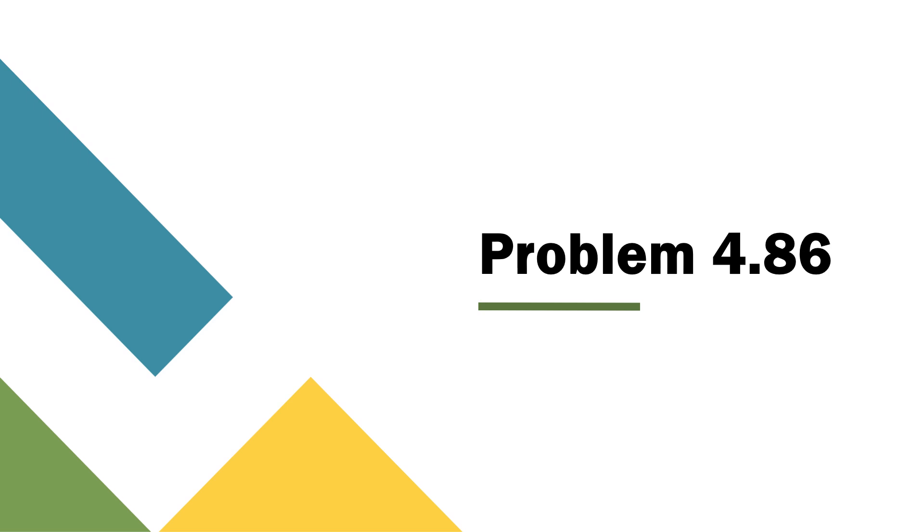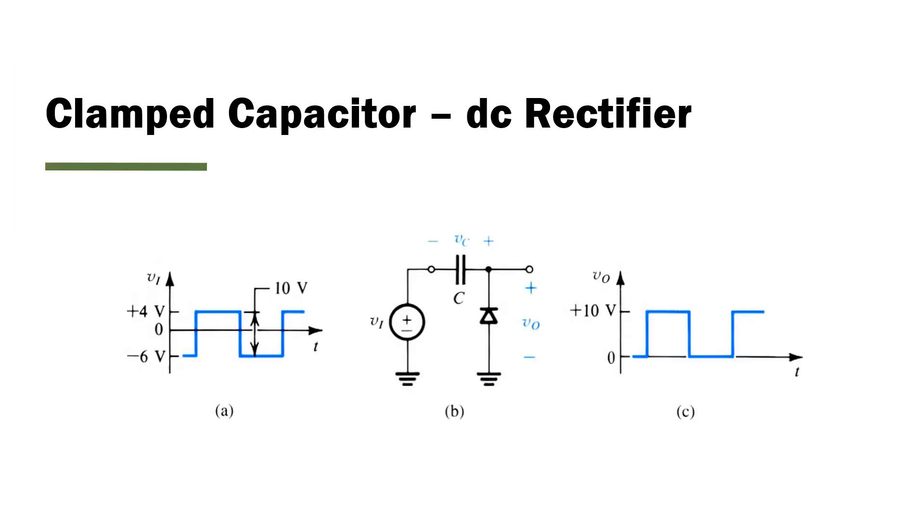So let's review it very briefly. A clamp capacitor circuit is typically built like this. We have an input voltage source connected in series, with the capacitor coming first, followed by a series connection of the diode. Now, why would someone do this? Let's analyze the input voltage that's being fed to this circuit.